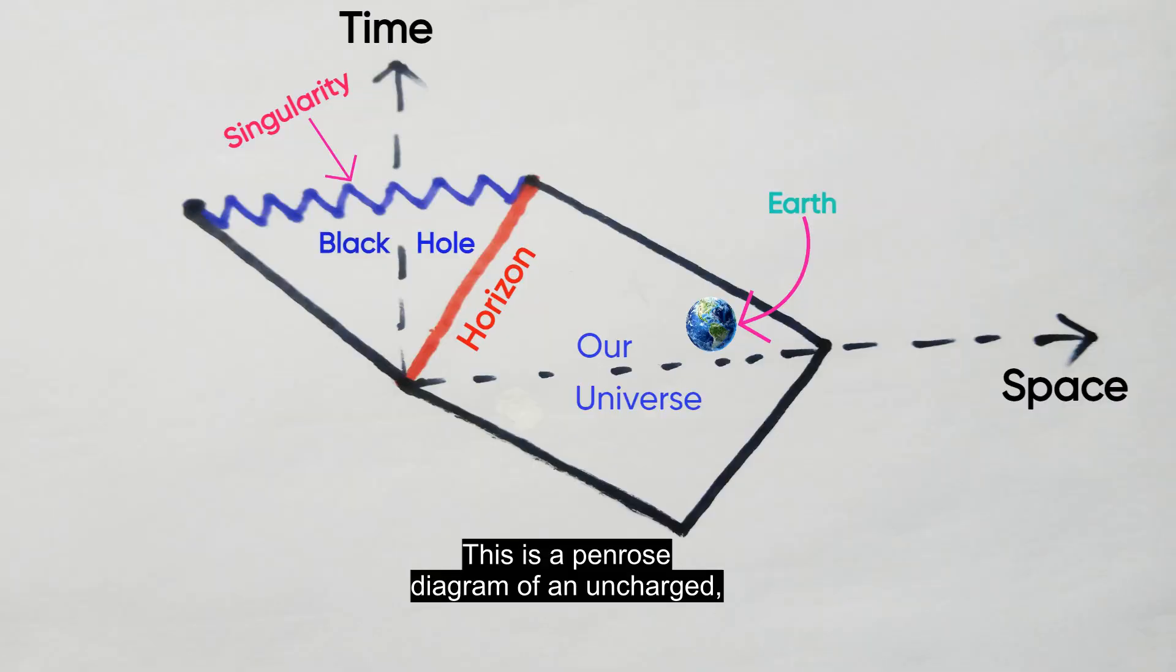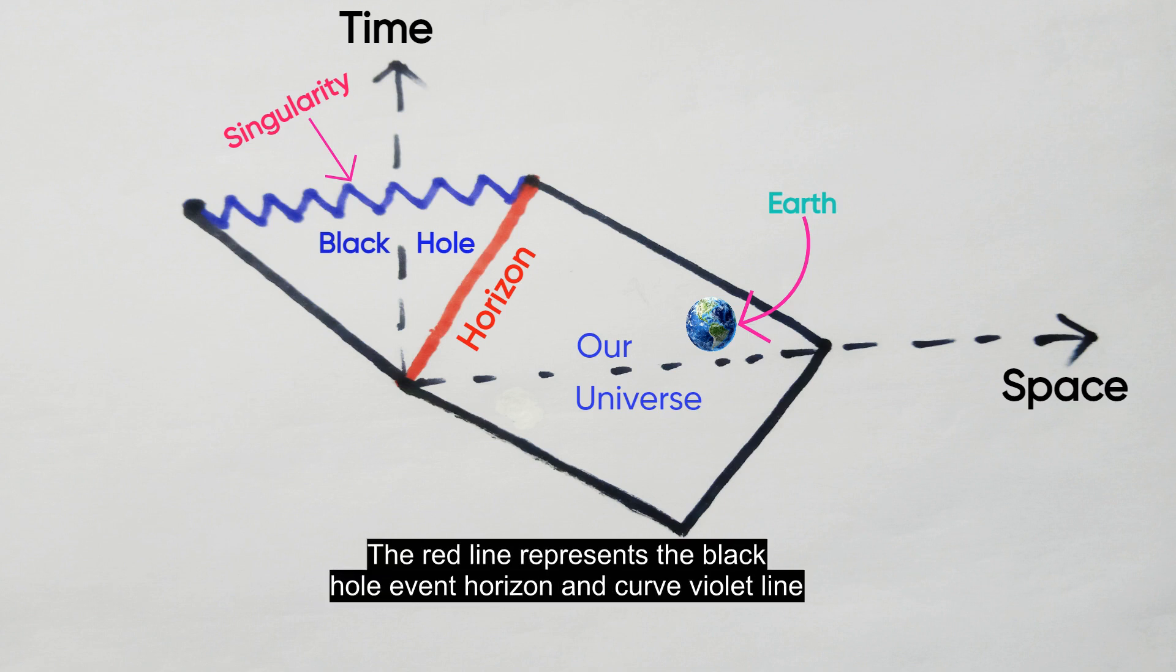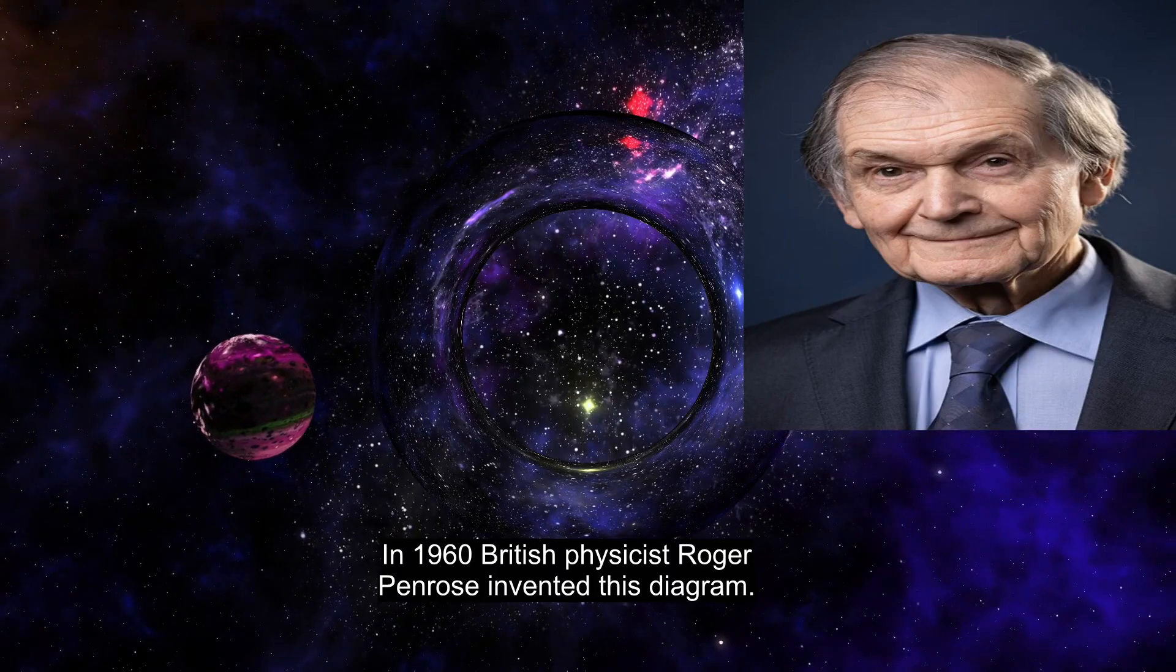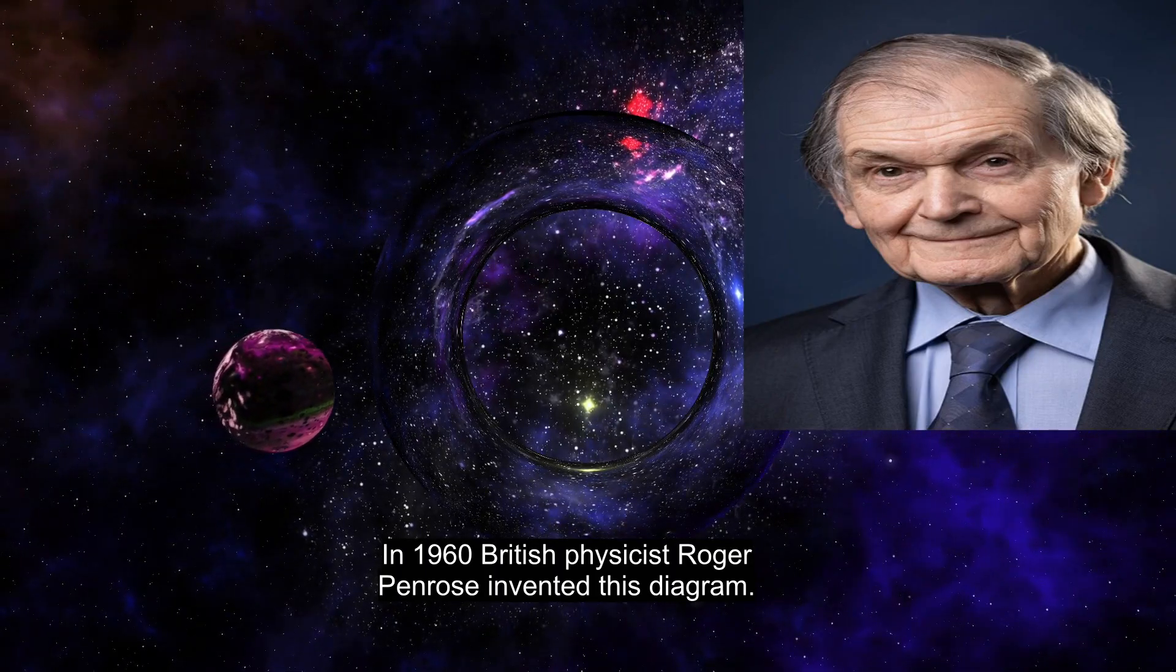This is a Penrose Diagram of an uncharged, non-rotating black hole, or Schwarzschild black hole. The red line represents the black hole event horizon, and the curved violet line represents the black hole singularity. In 1960, British physicist Roger Penrose invented this diagram.